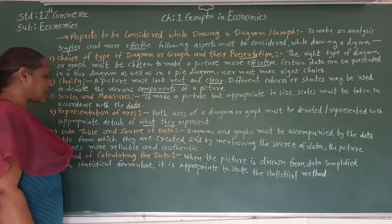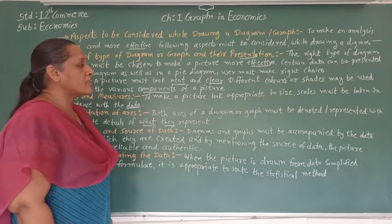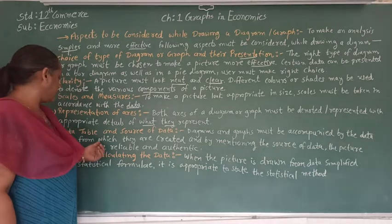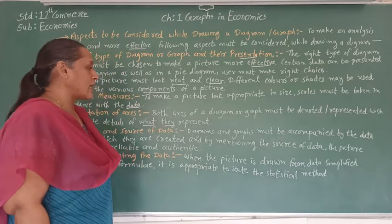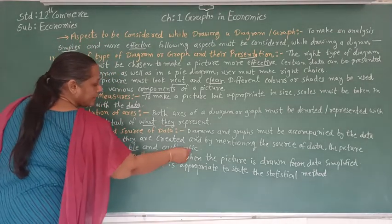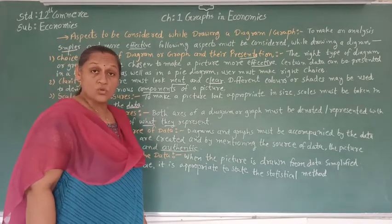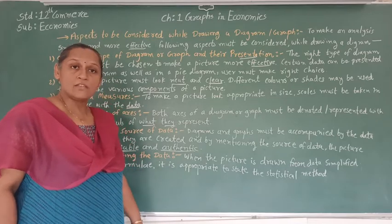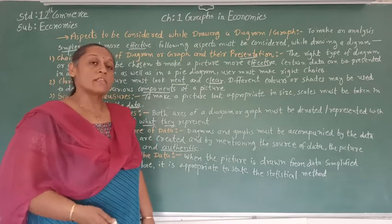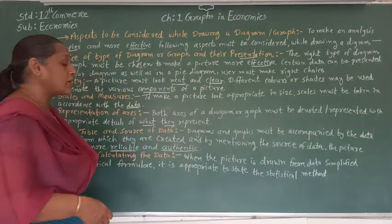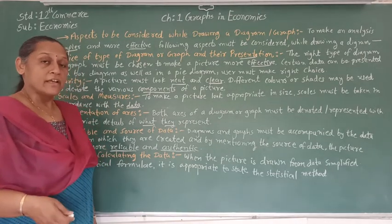The fifth aspect is the data table and source of data. A diagram and graph must be accompanied by the data table from which they are created, and by mentioning the source of data the picture becomes more reliable and authentic. Whatever data we have taken, the source from which it was taken is very important. If we are taking from an authentic source, the data is more reliable and the diagram and graph will be more trusted. So the source must be written in the diagram.